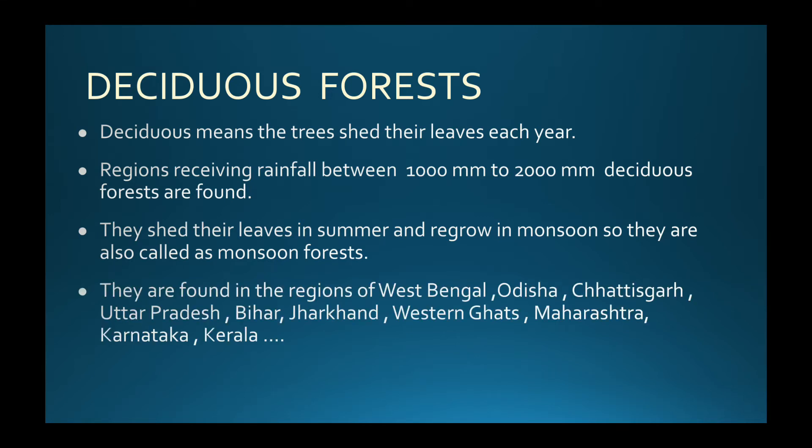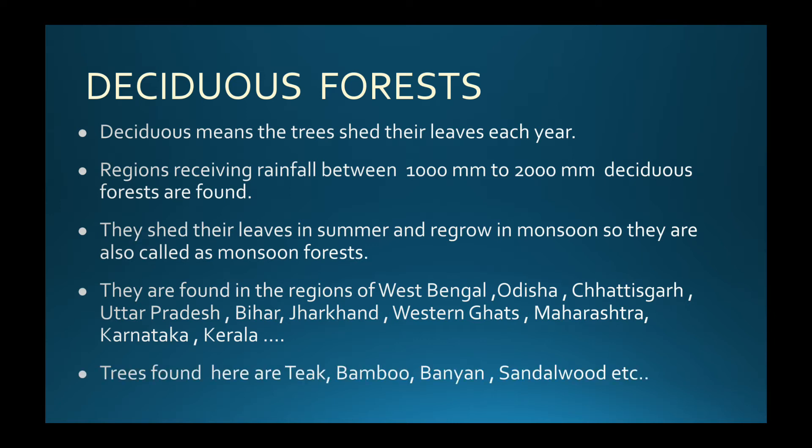Deciduous forests are found in West Bengal, Odisha, Chhattisgarh, Uttar Pradesh, Bihar, Jharkhand, Western Ghats, Maharashtra, Karnataka, Kerala, and other regions. Trees found here include Teak, Bamboo, Banyan and Sandalwood.